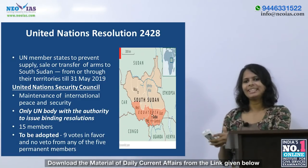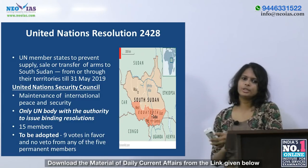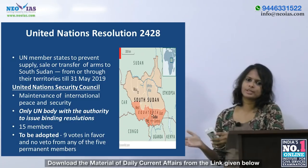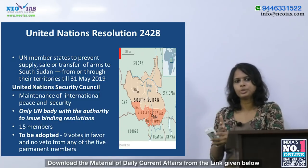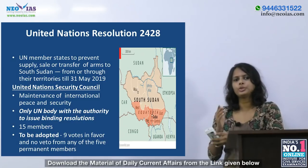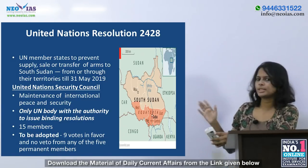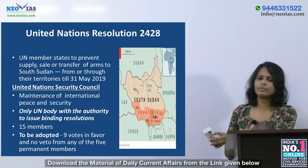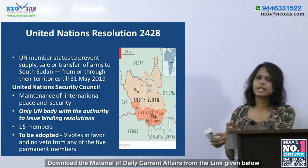The permanent members can veto any Security Council resolution. For any resolution to be adopted — like UN Security Council Resolution 2428 and Resolution 2427 we saw last day — the resolution needs 9 votes in favor and no veto from any of the permanent members of the council.